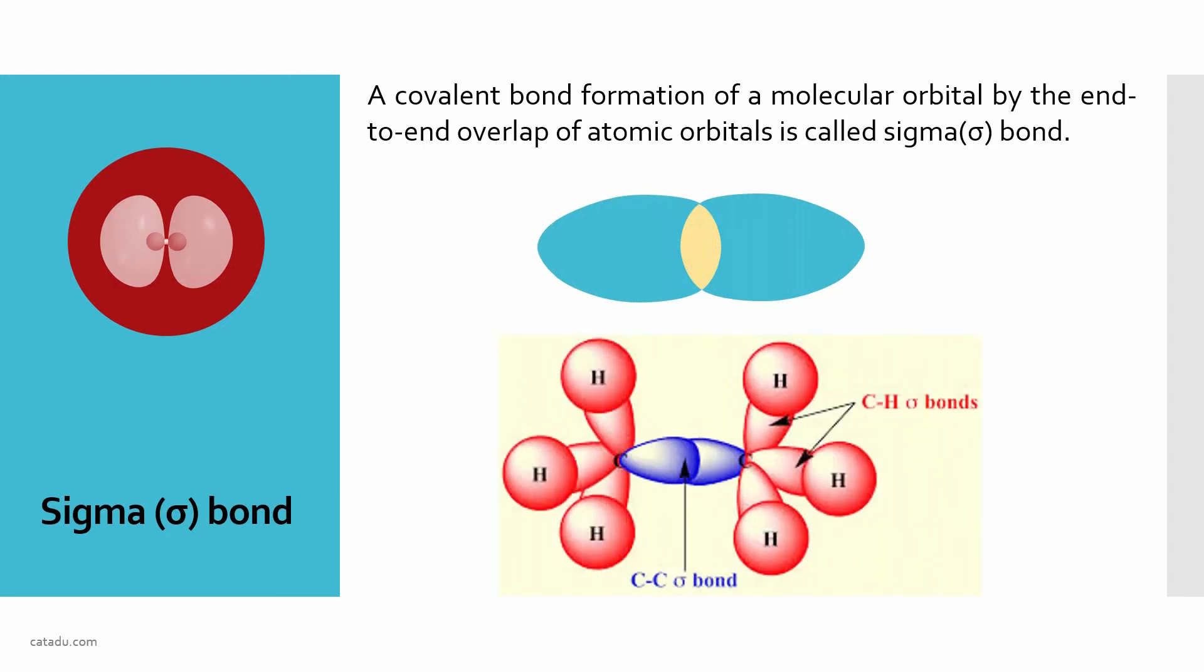I'm giving you an example: ethane. Ethane has carbon-carbon single bond, then carbon-hydrogen single bonds. Total here seven bonds, so seven sigma bonds are present.